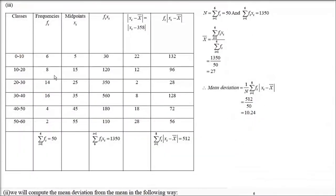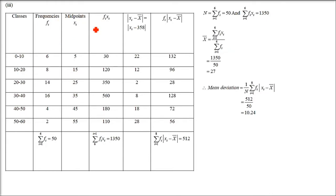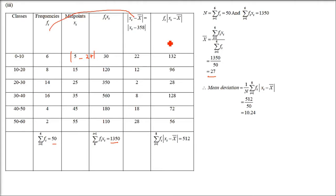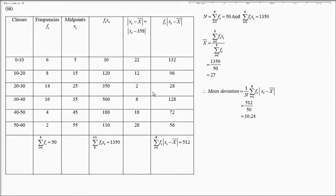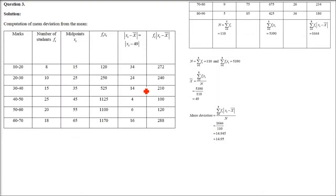The third sub-part follows the same steps: find fi×Xi, compute X̄ = Σ(fi×Xi)/Σfi = 27, subtract 27 from each Xi, take absolute values, multiply by fi, sum to get 512, then divide by 50 to get mean deviation = 10.24.